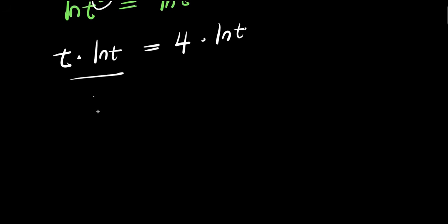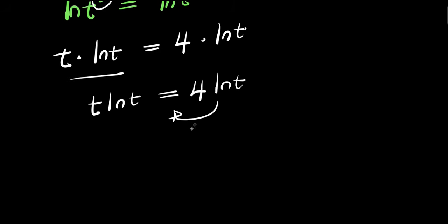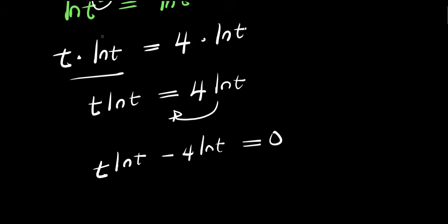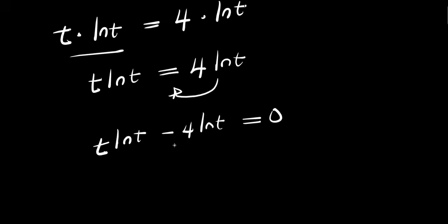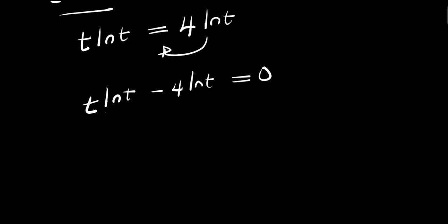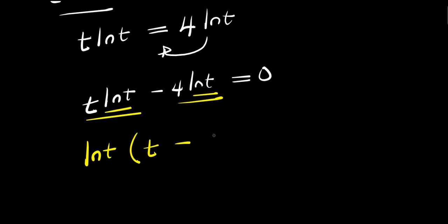We have t times ln of t equals 4 times ln of t. Moving the right side over, we get t ln(t) minus 4 ln(t) equals 0. Factoring out ln(t), we have ln(t) times (t minus 4) equals 0.